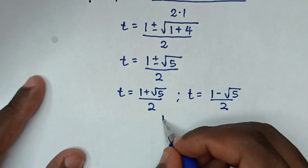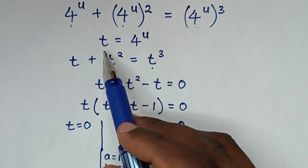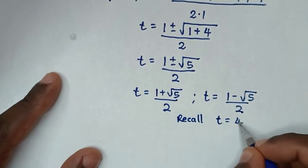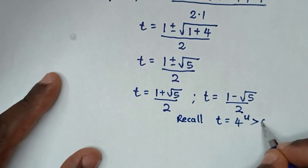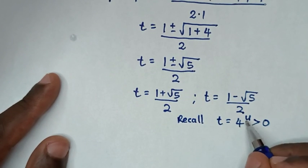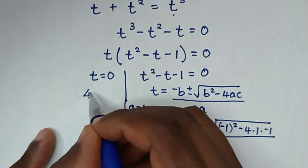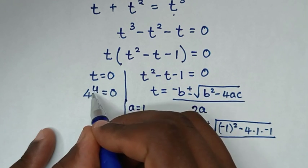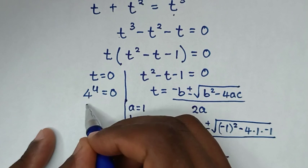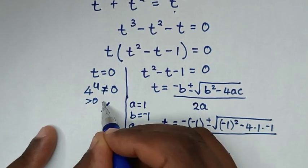We recall that we let t equal to 4 to the power of u. Since 4 to the power of any number is always greater than 0, we compare: can 4 to the power of u equal 0? No — 4 to the power of u is always greater than 0 and never equals 0. So the solution t equals 0 is rejected.